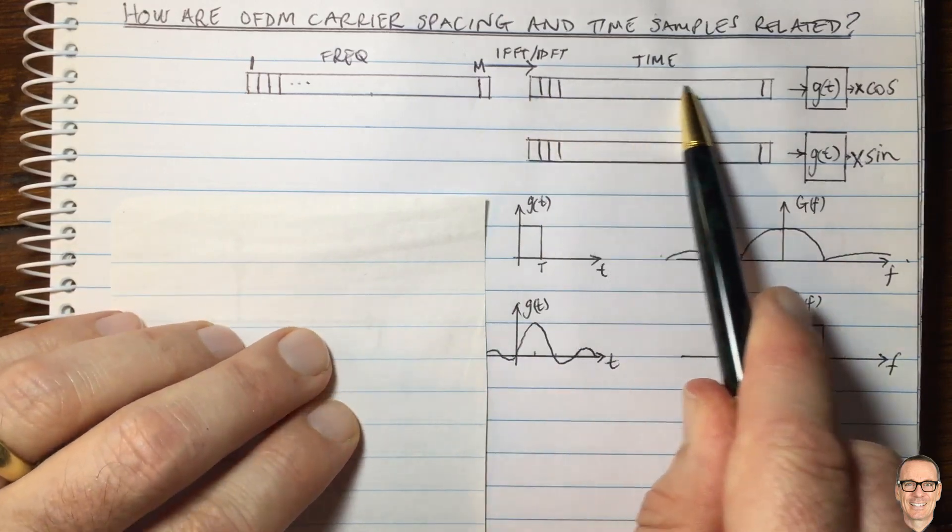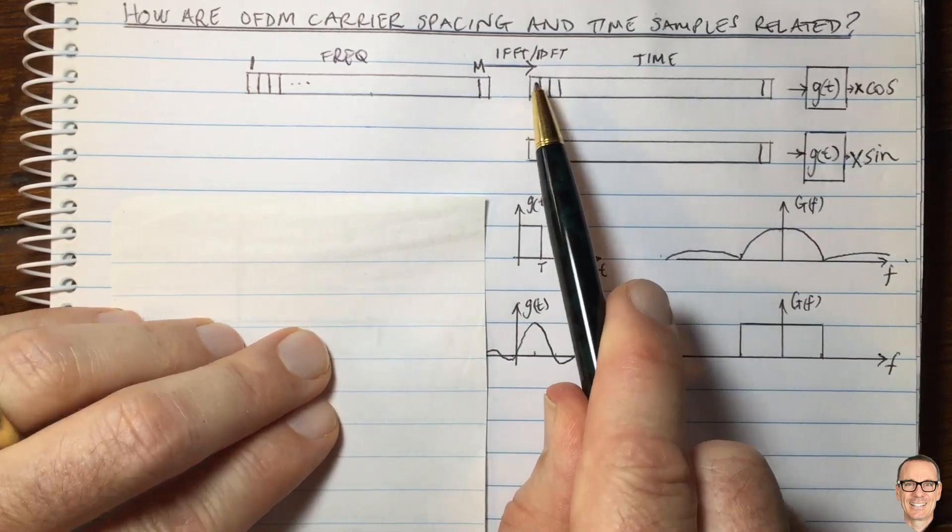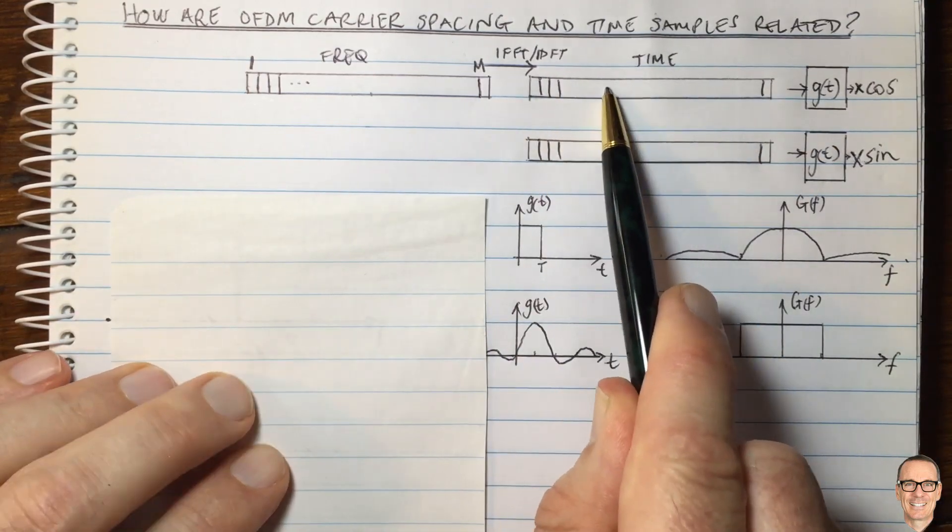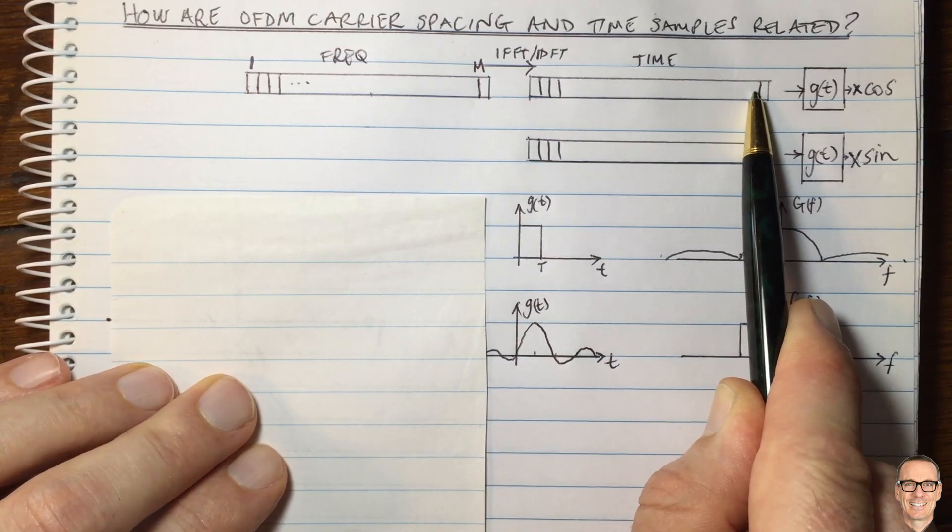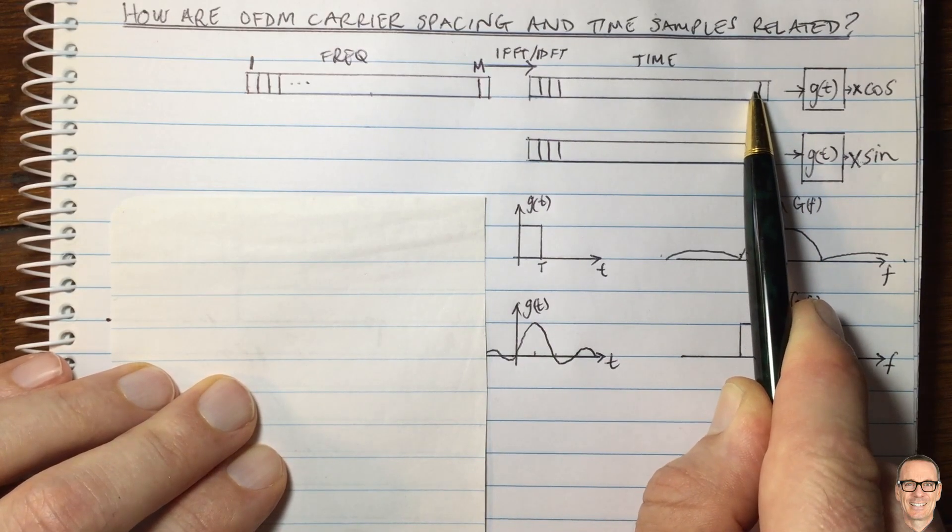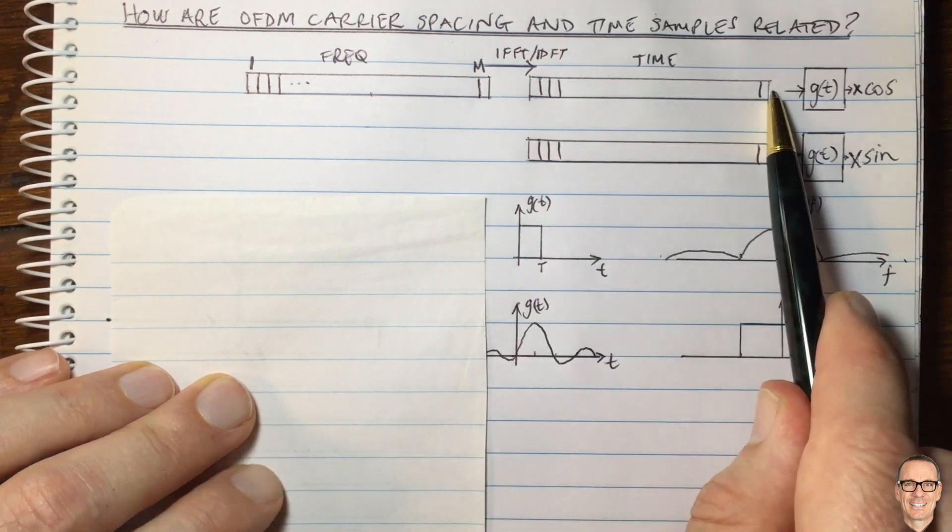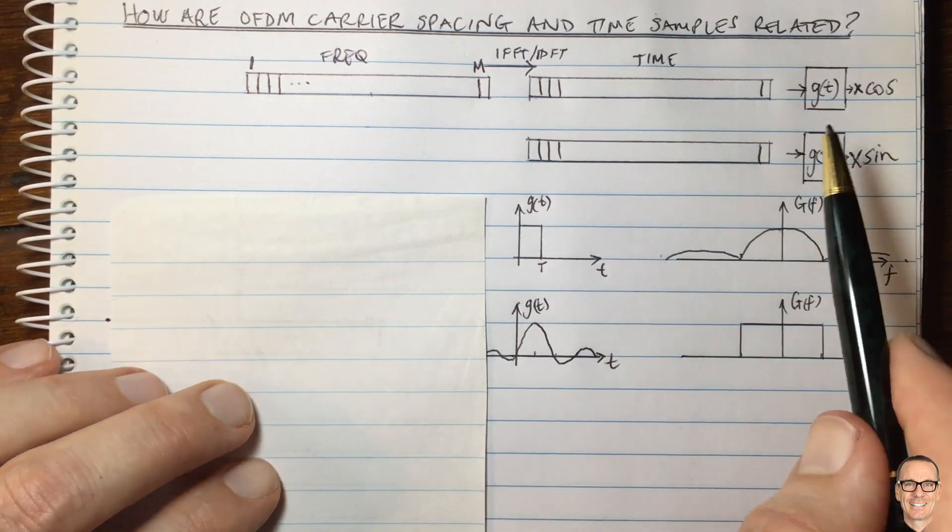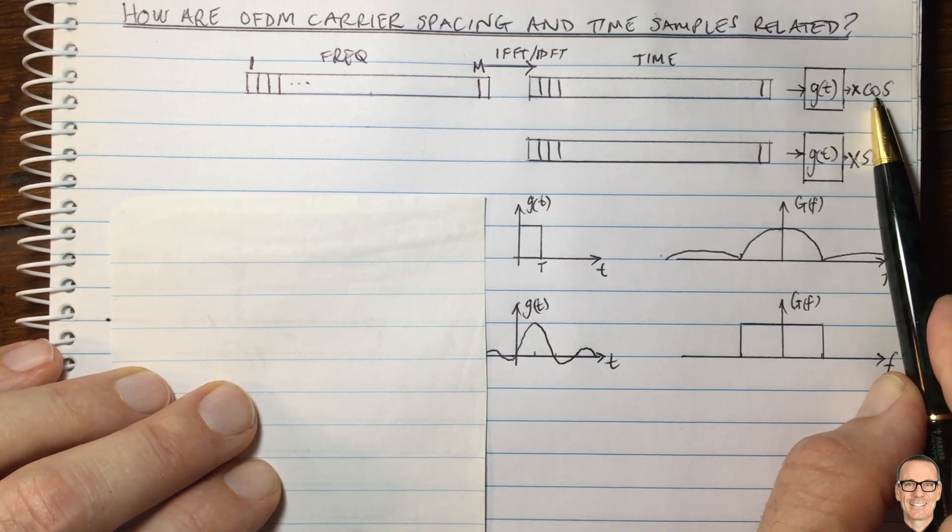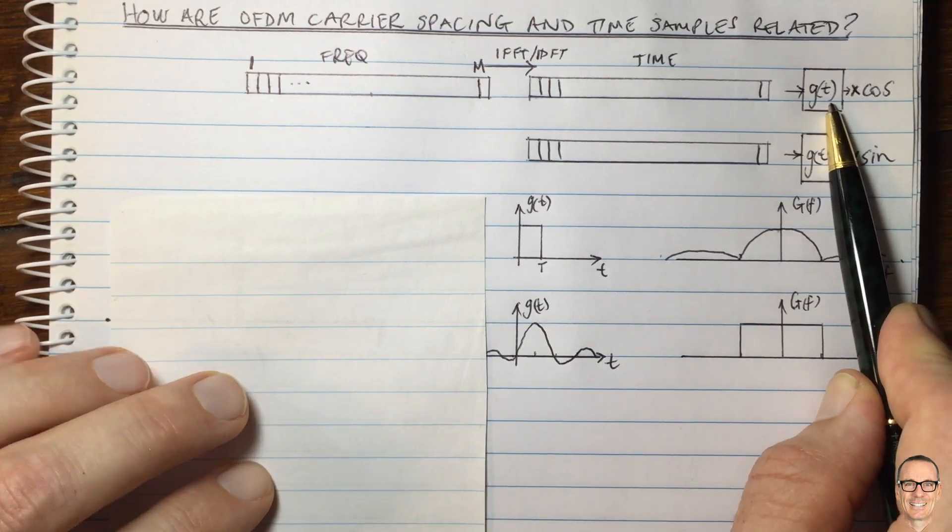One is these time samples. These are just, to remind you, just numbers in a computer or in the digital transmitter of the OFDM system. They are just numbers. They need to be transferred into an actual waveform which can be transmitted. That is the job of the pulse shaping filter.